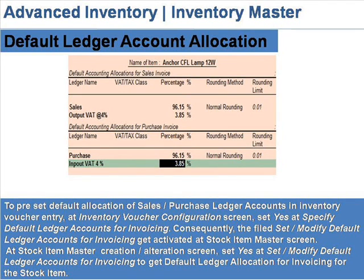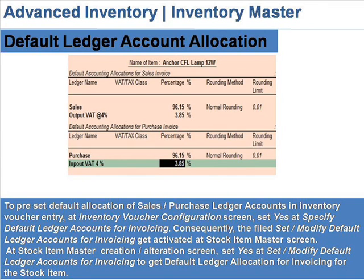Default Ledger Account Allocation. To preset default allocation of sales and purchase ledger accounts in every inventory voucher entry, go to the inventory voucher configuration screen and set 'Yes' at 'Specify default ledger accounts for invoicing.' Consequently, the field 'Set modified default ledger accounts for invoicing' gets activated at the stock item master screen.